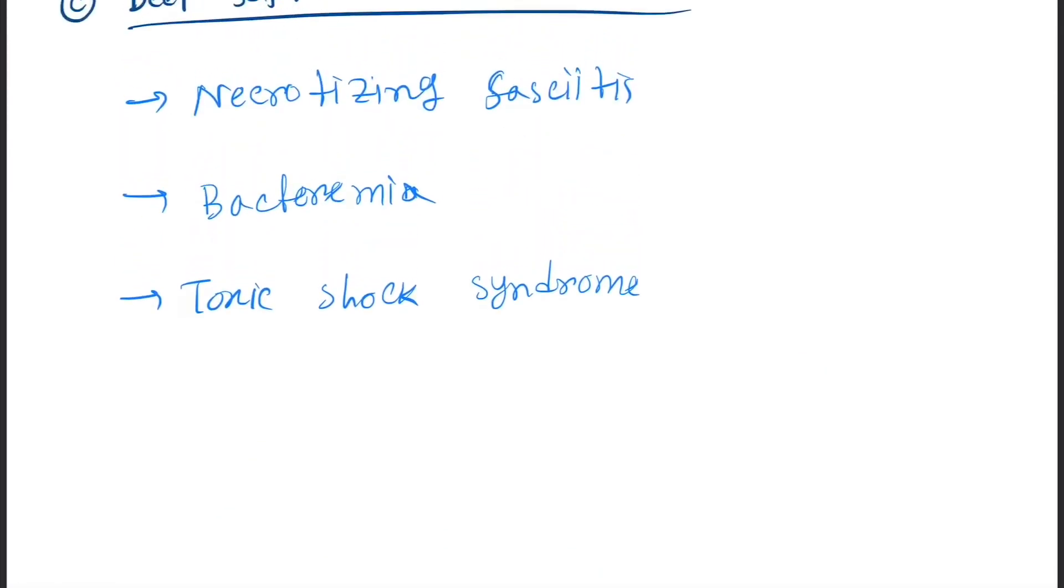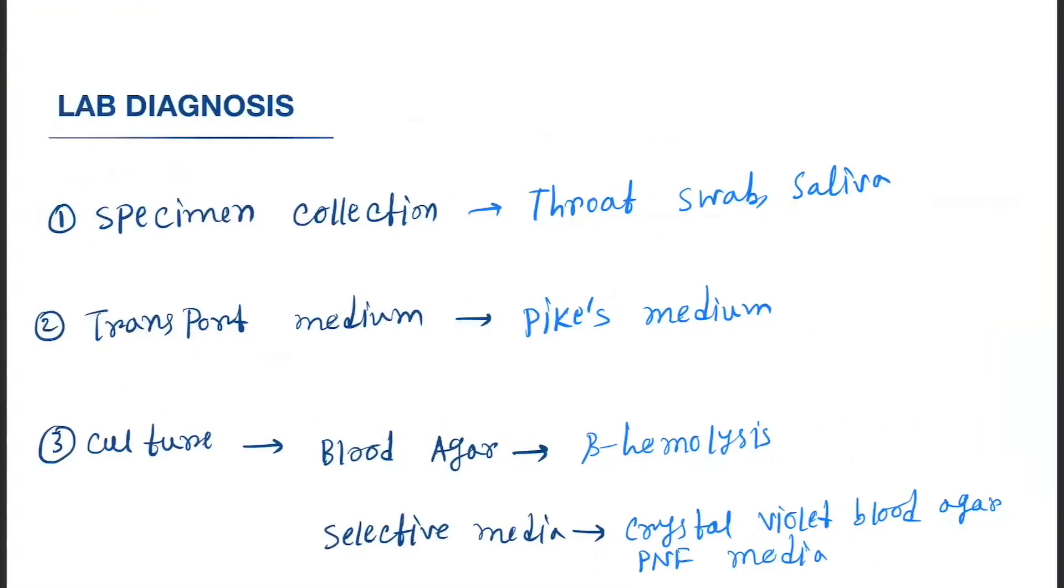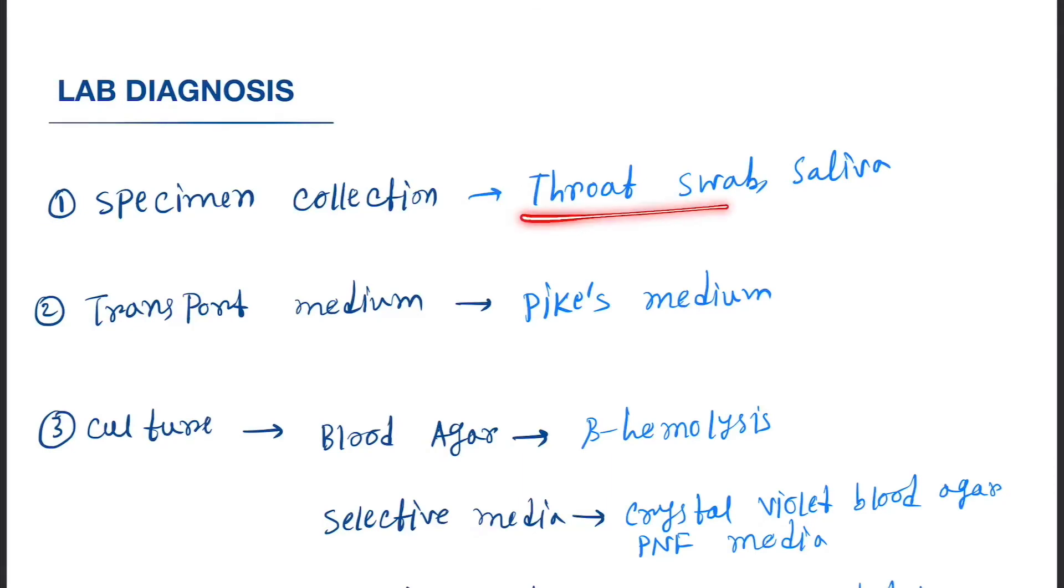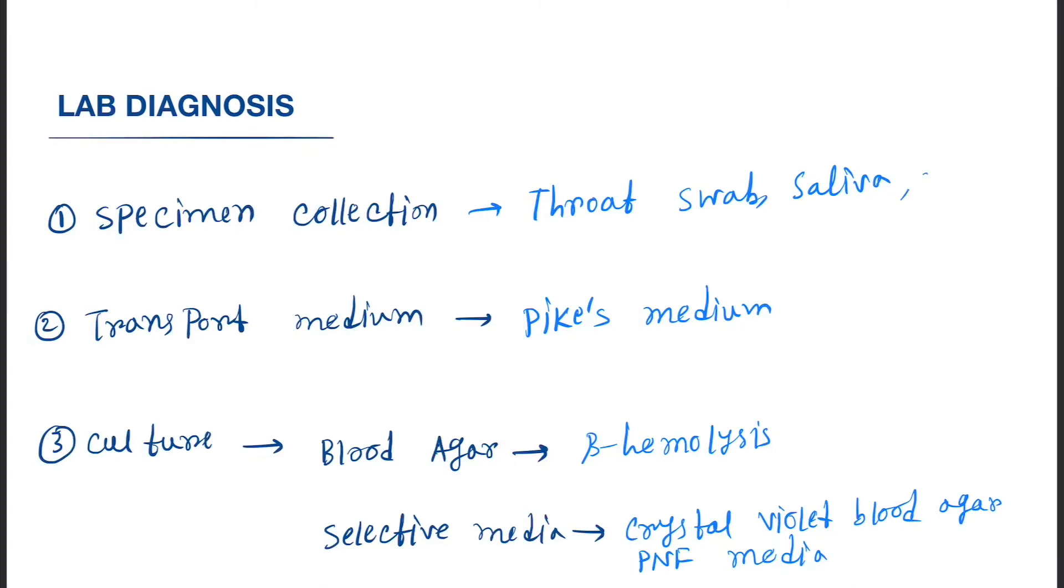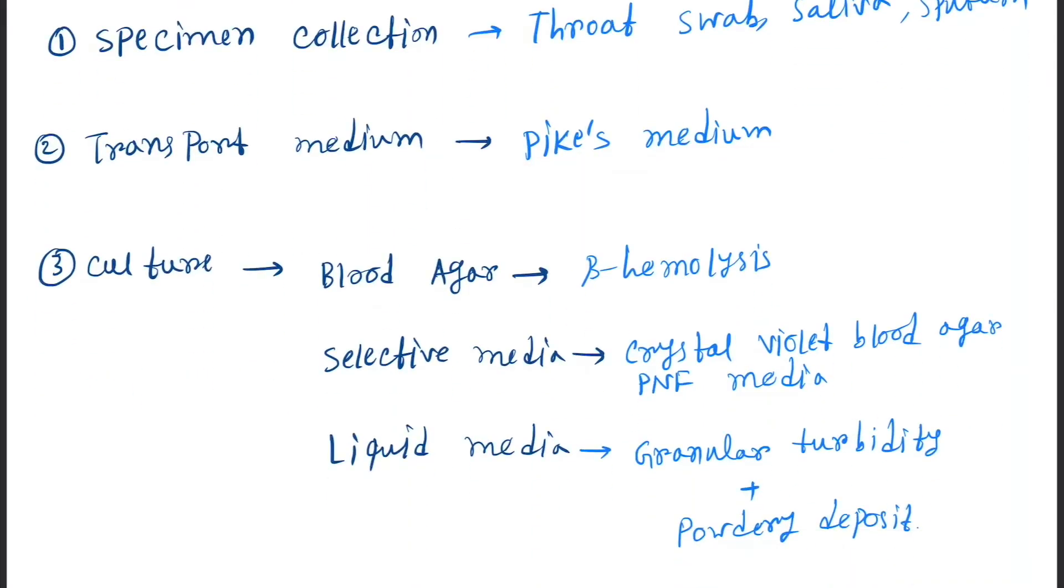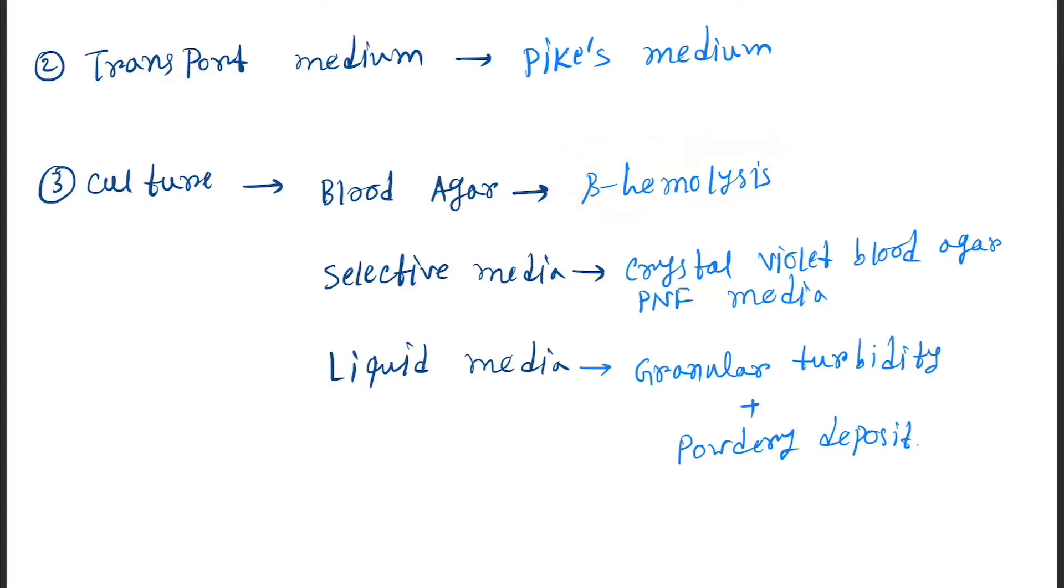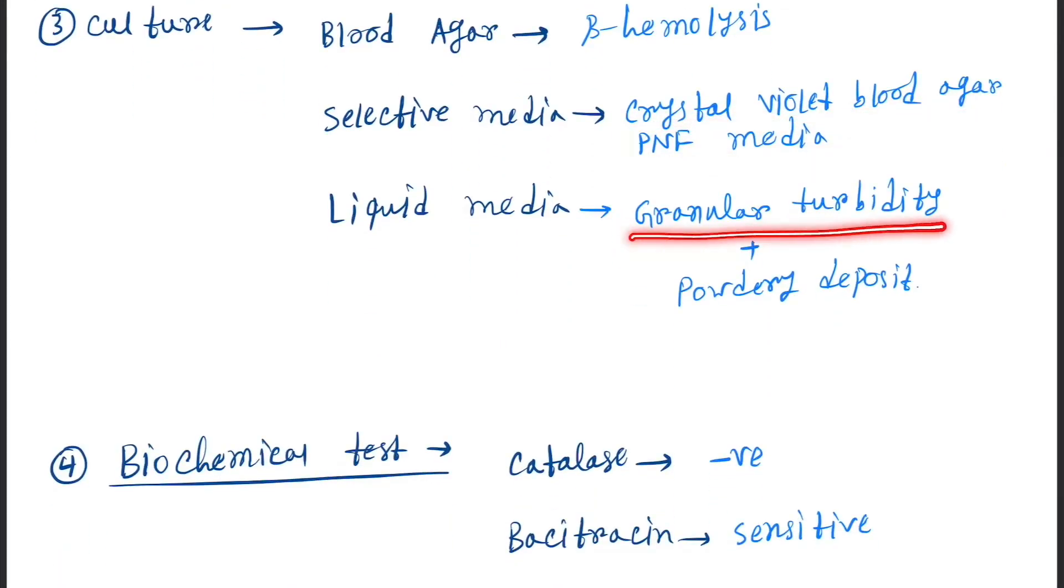Next is lab diagnosis. First we will collect the throat swab and the sputum. Transport media: Pike's medium. Culture: blood agar, beta hemolysis will be seen. Selective media are crystal violet blood agar and PNF media. Liquid selective media with granular turbidity showing granular turbidity and powdery with pyrrole deposit.